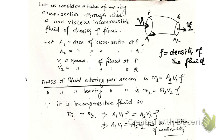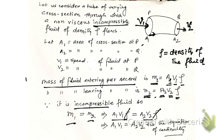The mass of fluid entering per second is m1 = A1·v1·ρ, and the mass leaving per second is m2 = A2·v2·ρ. Since the fluid is incompressible, the same mass per second that enters must go out, so m1 = m2. Cancelling rho on both sides gives A1·v1 = A2·v2. This is the equation of continuity.